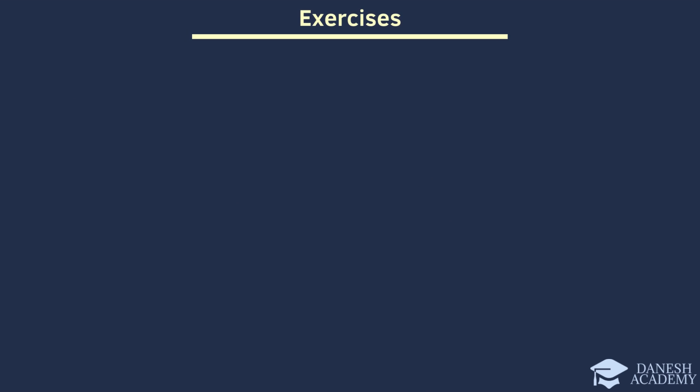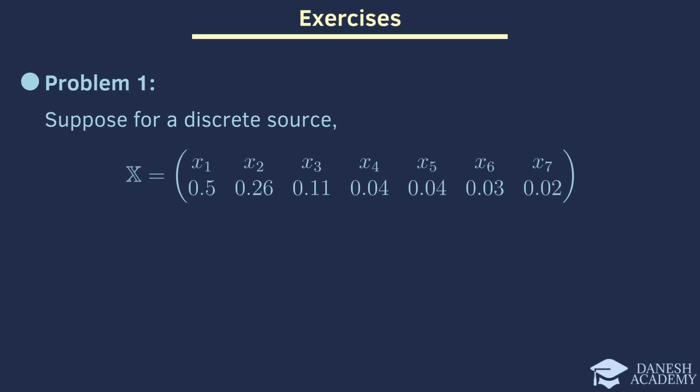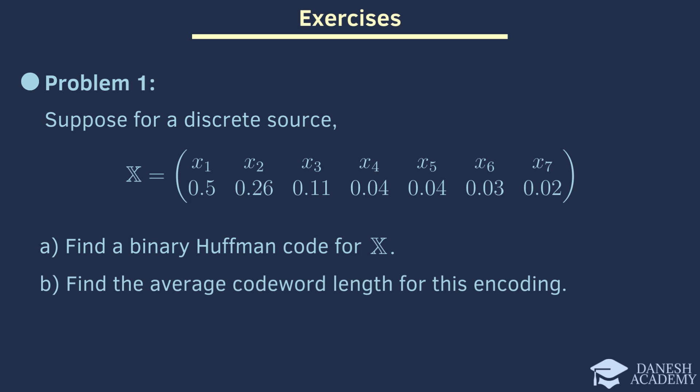Now that you have become familiar with Huffman code, I have two interesting problems to challenge you with. In the first problem, we are presented with a discrete information source consisting of symbols and their corresponding probabilities. Our objective is to devise a binary Huffman code for this source. After that, we will determine the average codeword length for this encoding and finally we'll find the ternary Huffman code.